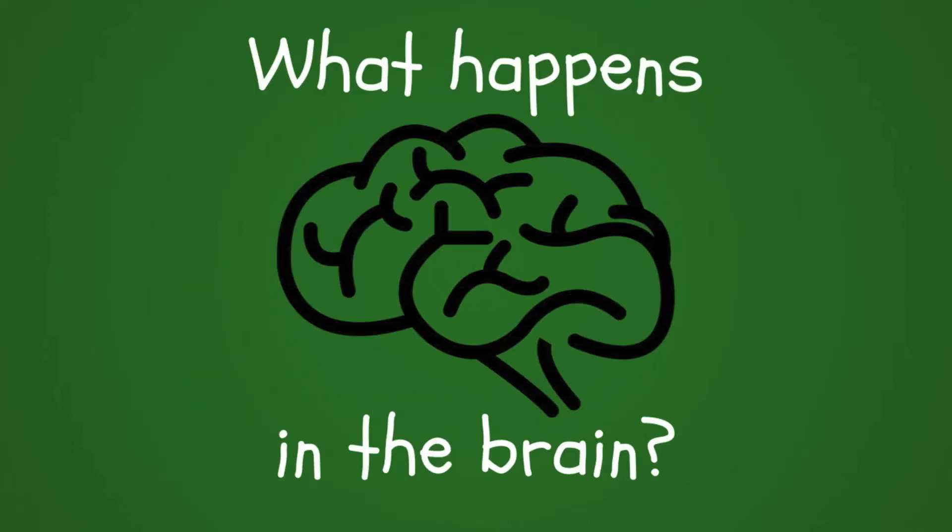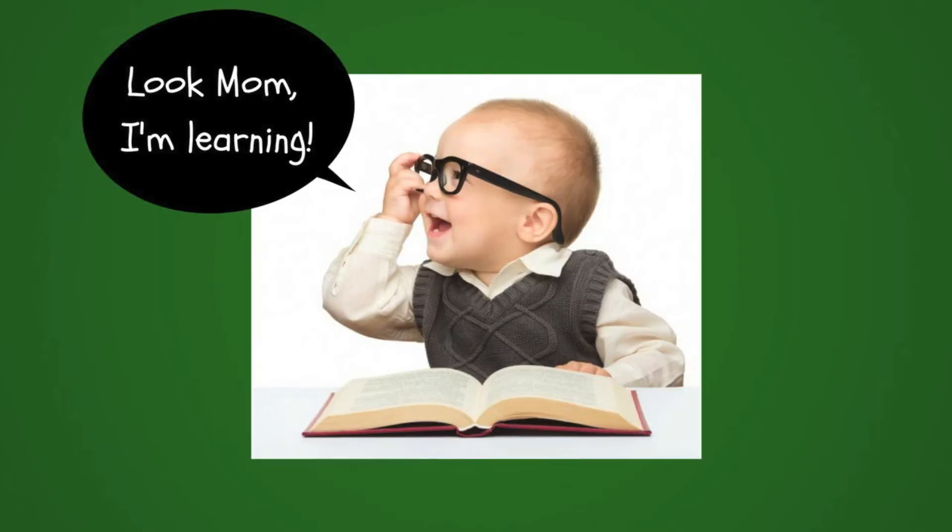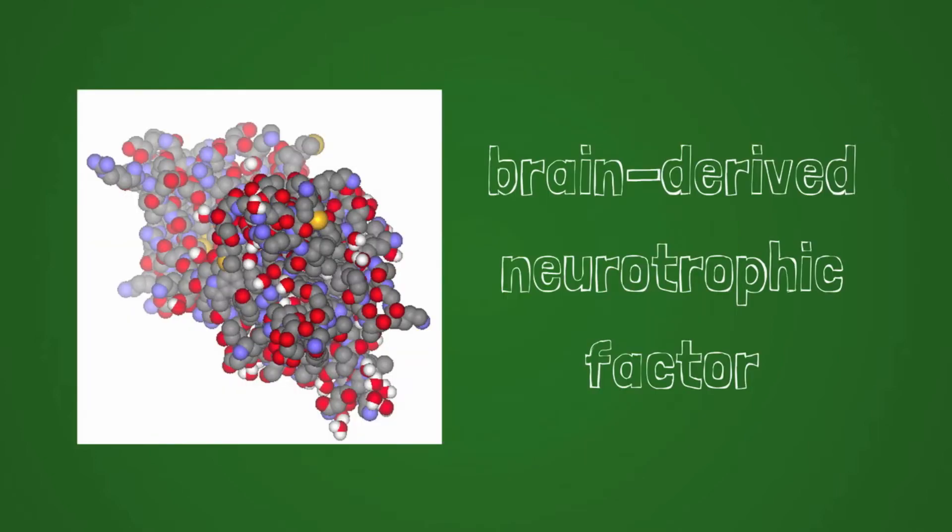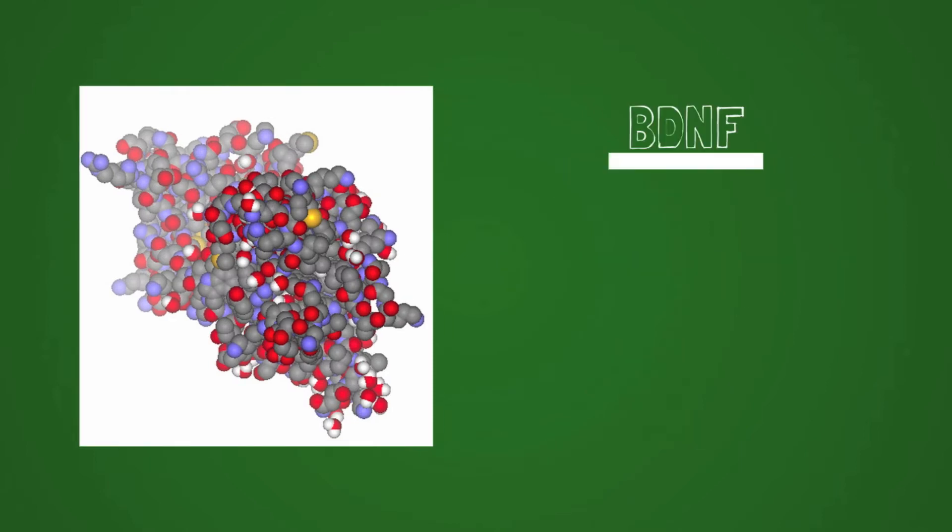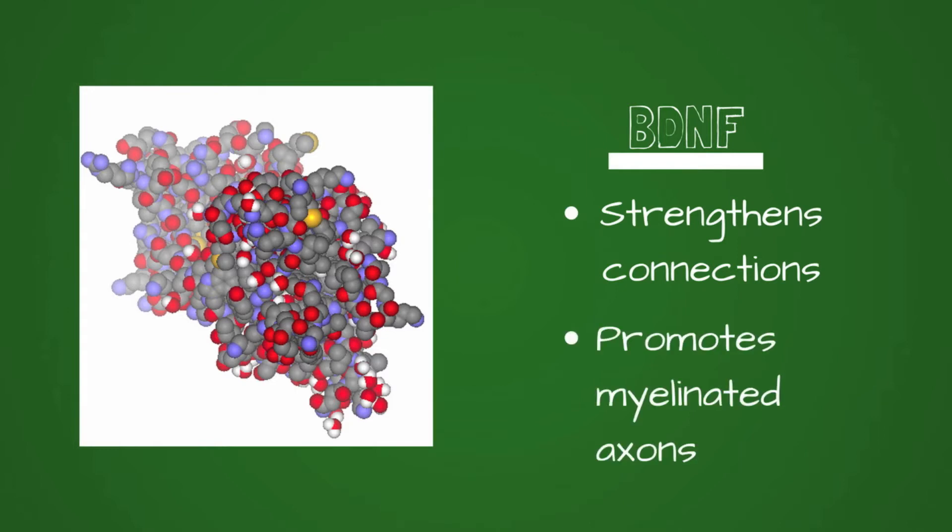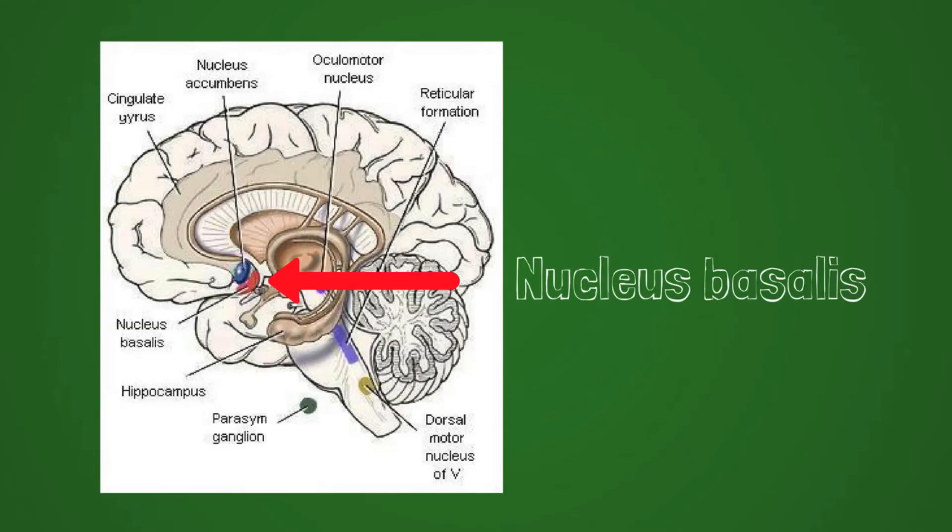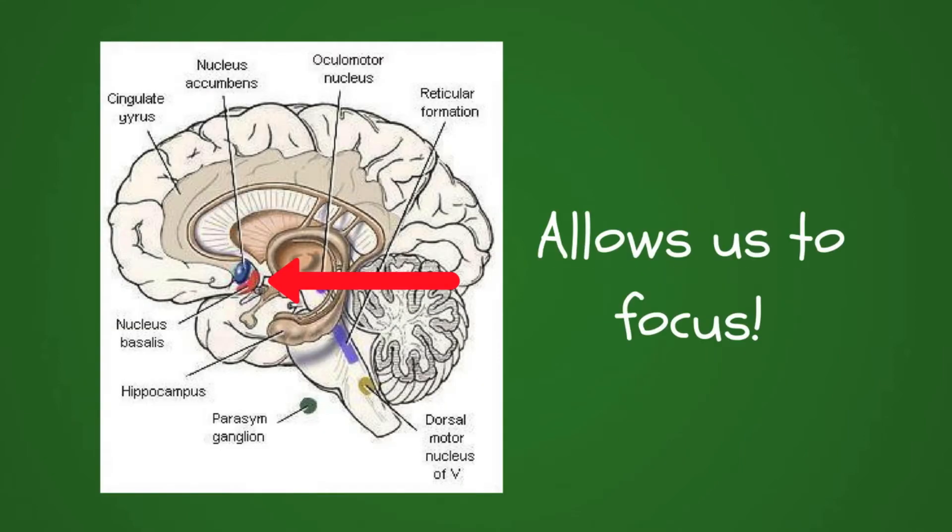Those are the ways we learn, but what actually happens in the brain when we learn? Very young children are always learning because of a hormone called brain-derived neurotrophic factor or BDNF. BDNF helps strengthen connections between neurons, including promoting the growth of myelinated axons. This hormone also turns on the nucleus basalis, the part of the brain that allows us to focus our attention.